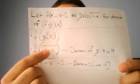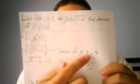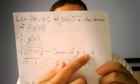And the domain of g would be x being less than or equal to 4.